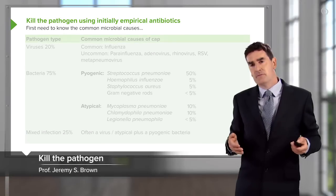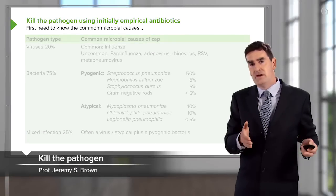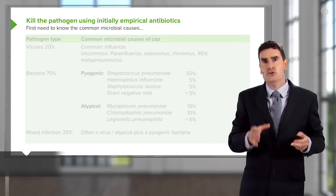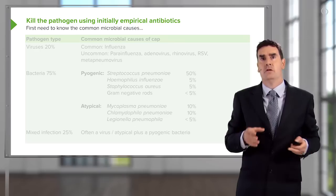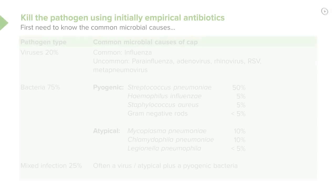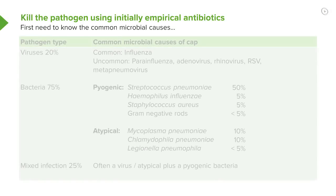Killing the pathogen. When the patient first presents with pneumonia, you don't know what the bug is causing that pneumonia. So we treat patients initially with what we call empirical antibiotics — ones which will cover the common causes of pneumonia. And to do that, we need to know what the common microbial causes of pneumonia are.